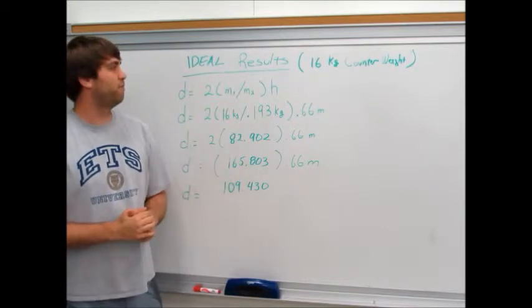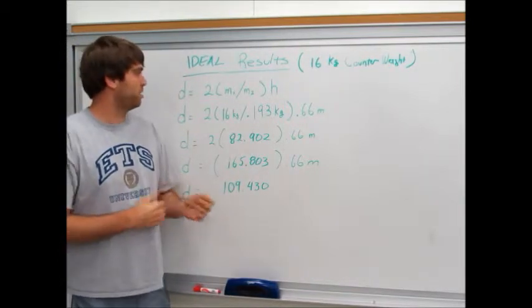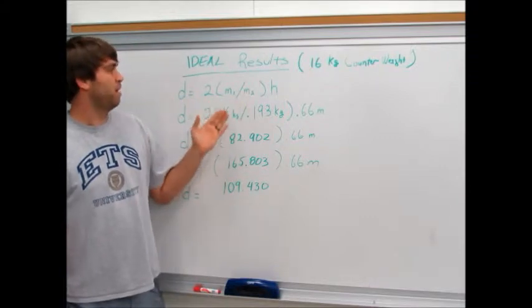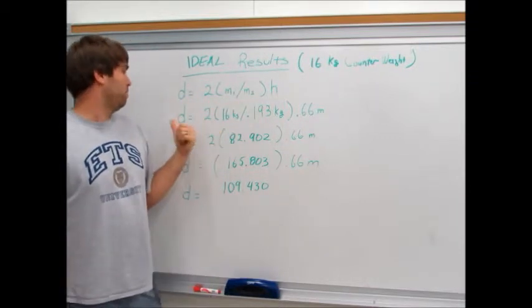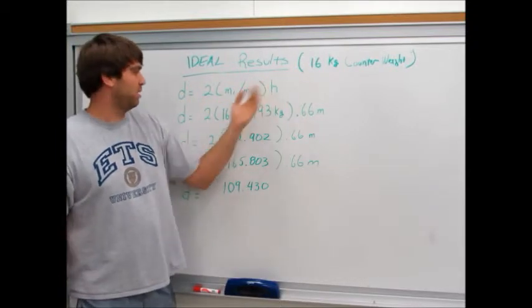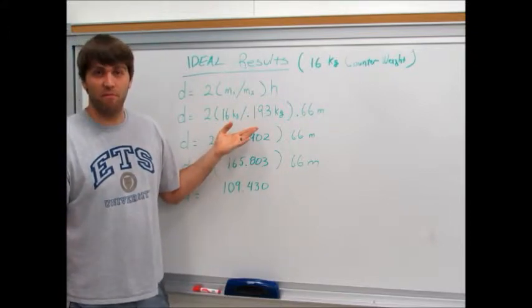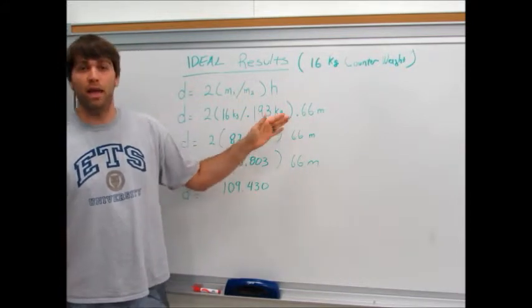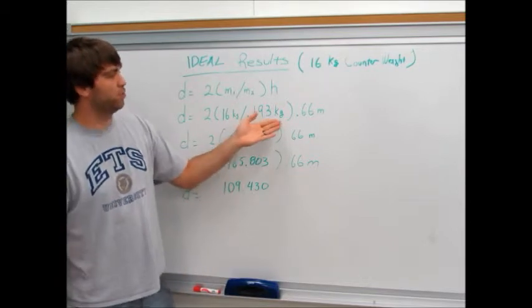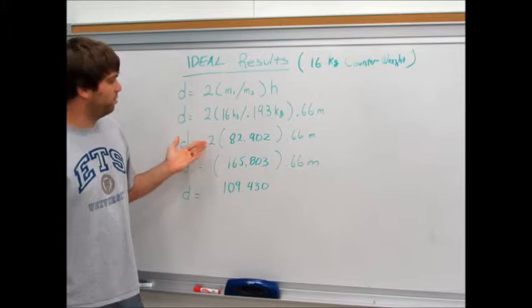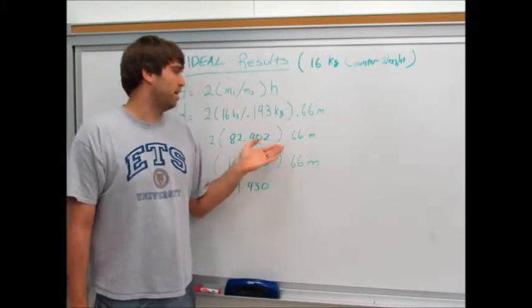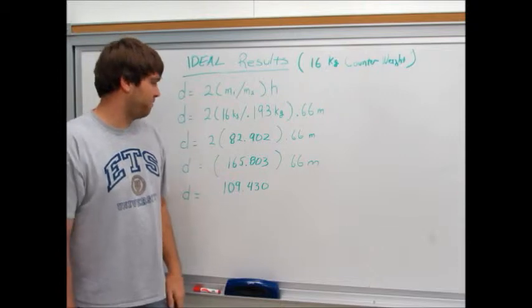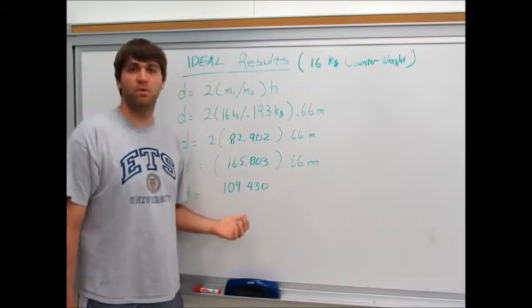The ideal results for the 16 kilogram counterweight: distance equals 2 times mass 1 divided by mass 2 times h. Mass 1 is the mass of the counterweight, being 16 kilograms. Mass 2 is the mass of the softball, being 0.193 kilograms. And the height h is the distance the counterweight drops, 0.66 meters. Breaking it down, 2 times 82.902 times 0.66 meters ends up being 165.803 times 0.66 meters. And we get the final result of the distance being 109.430 meters.